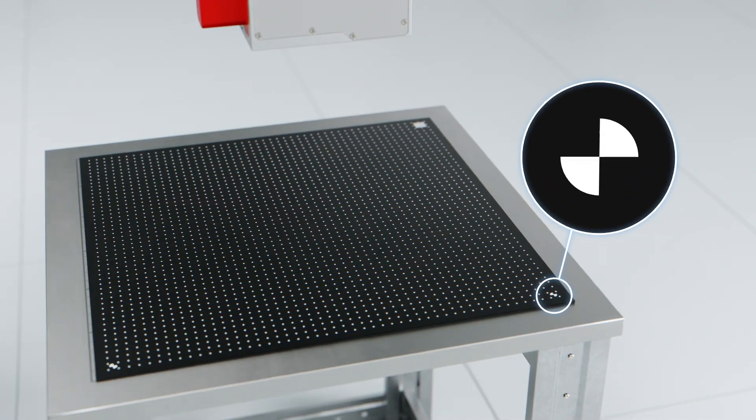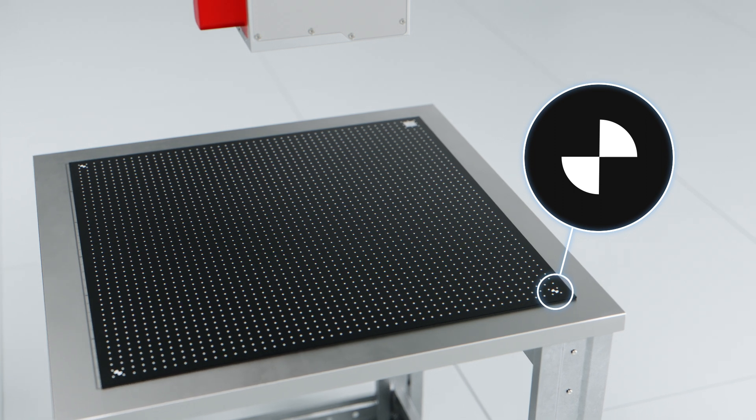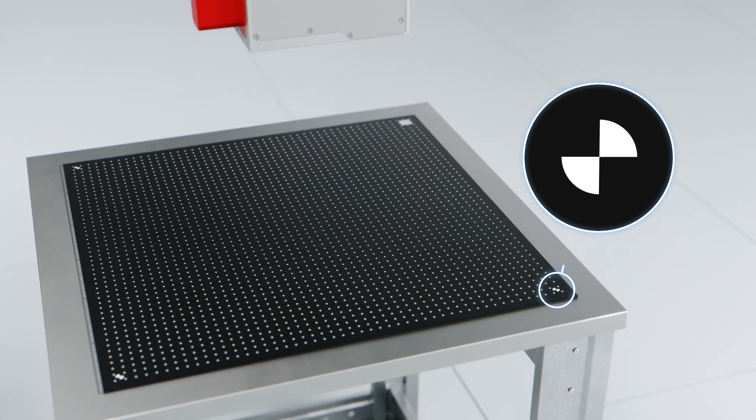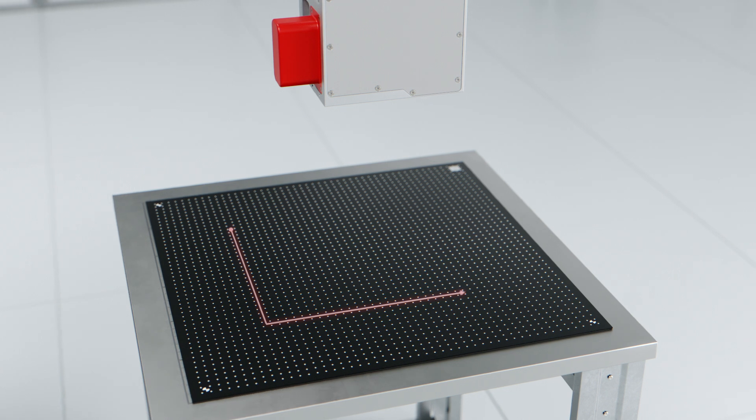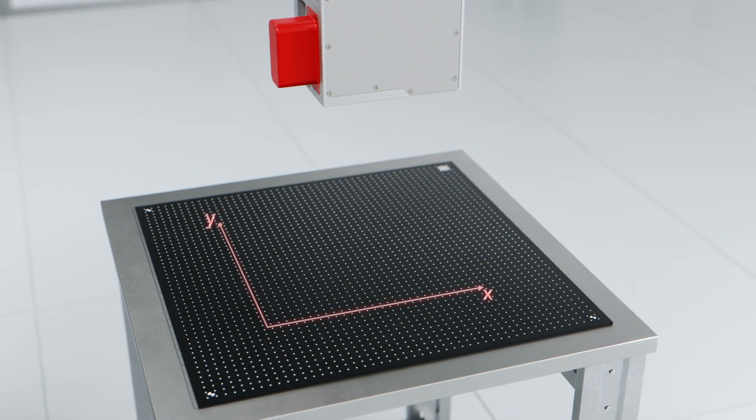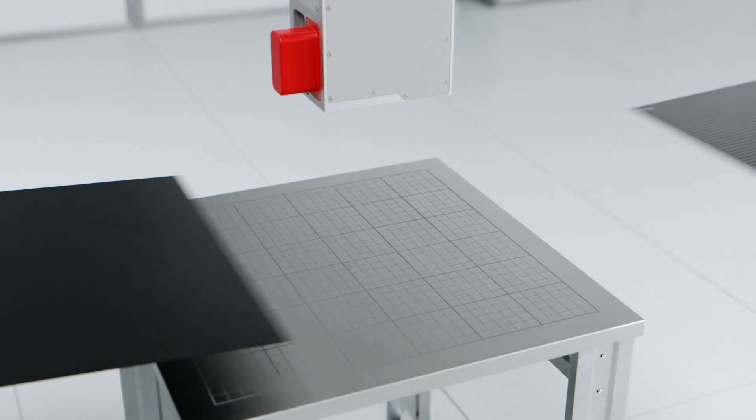Alignment marks are used to identify the correct rotation of the calibration plate. The X-Y grid is used to calibrate the correct horizontal extension and homogeneity of the scan field.